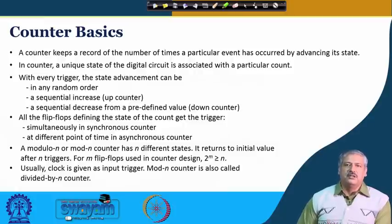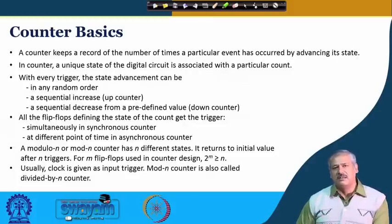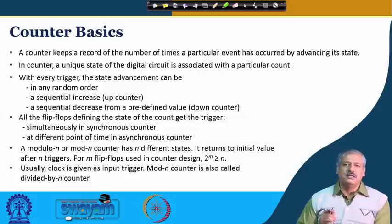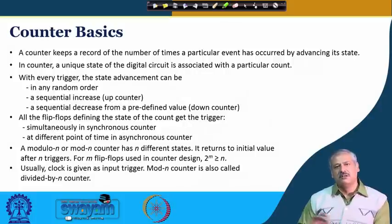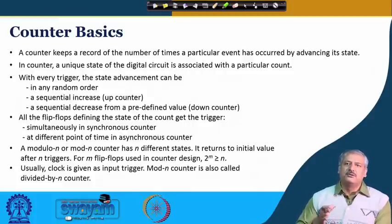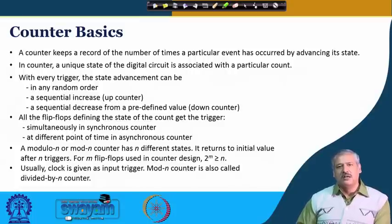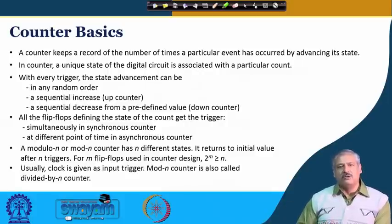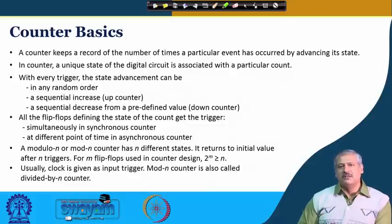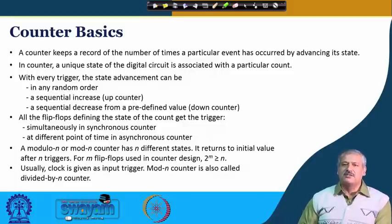The way the events trigger all the flip-flops in the counter: if the trigger goes to each flip-flop simultaneously, it is called a synchronous counter. If the external trigger goes to only one flip-flop and that flip-flop in turn triggers the next, and so on — as if the effect is rippling through — that is called a ripple counter. It is happening at different points of time, so it is not synchronous with the external trigger, and is also called an asynchronous counter.